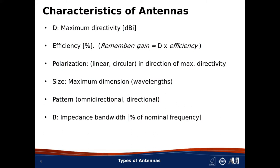Finally, bandwidth B — specifically impedance bandwidth, meaning the contiguous span of frequencies over which the antenna can be reasonably well matched to a radio with frequency-independent impedance. I'll discuss fractional bandwidth: impedance bandwidth divided by center frequency. For example, if the center frequency is 100 MHz and the impedance bandwidth is 1%, then the impedance bandwidth is 1 MHz, because 1 MHz divided by 100 MHz is 1%.